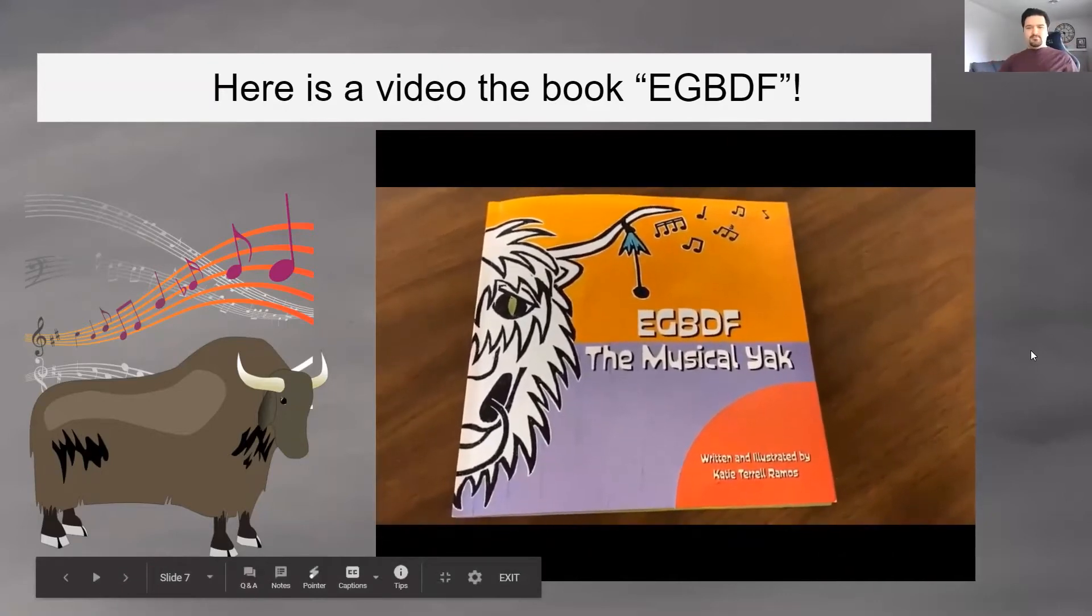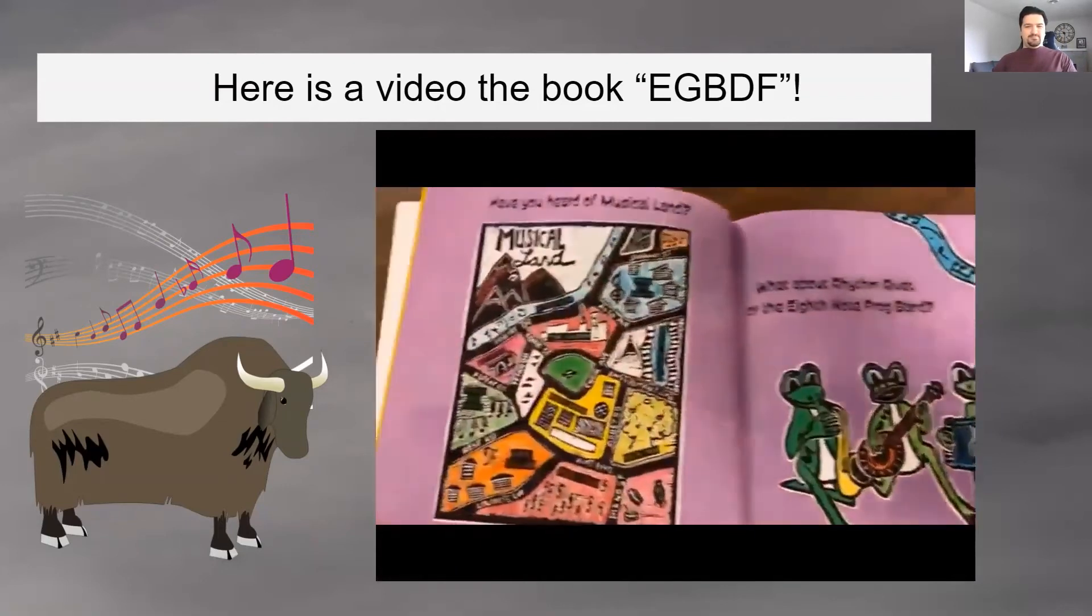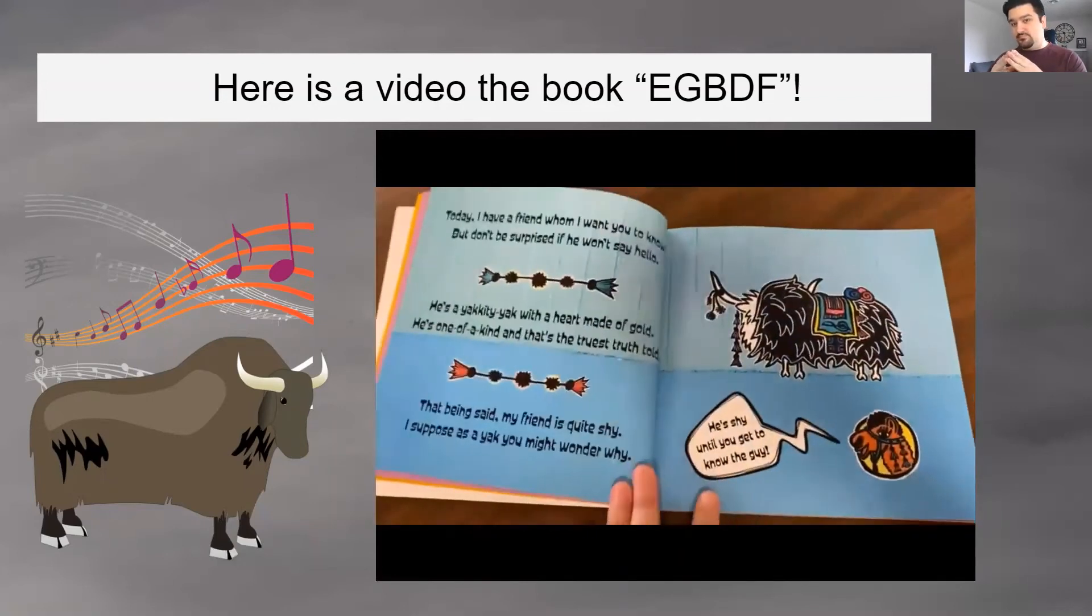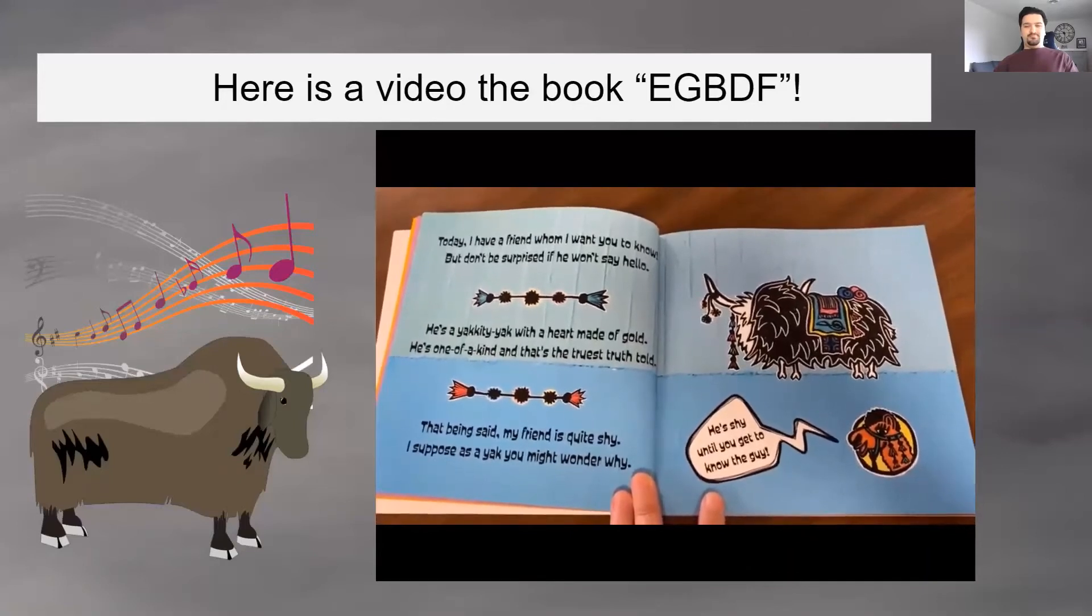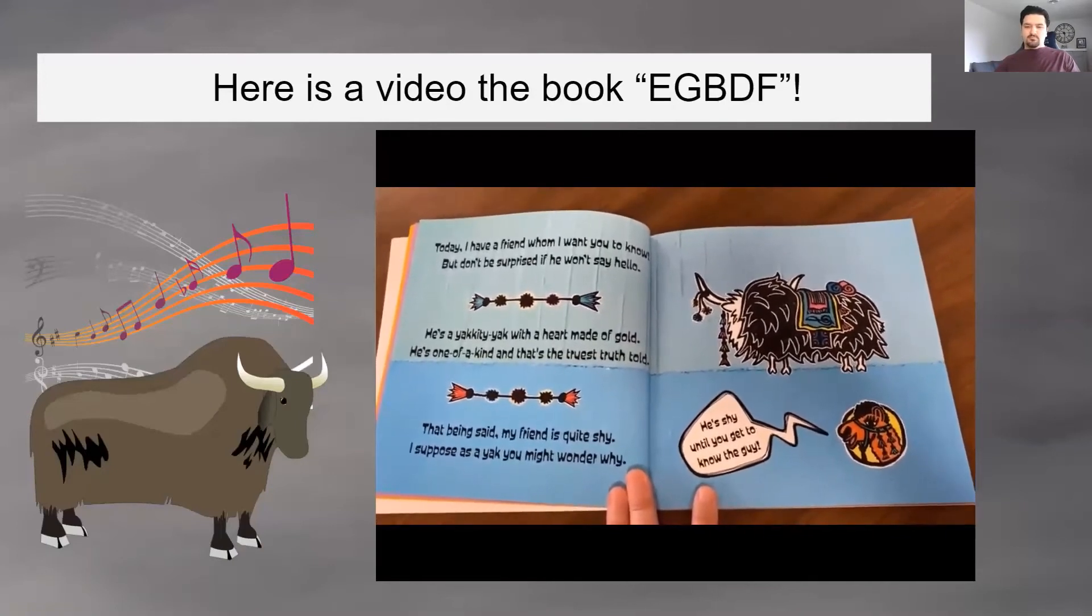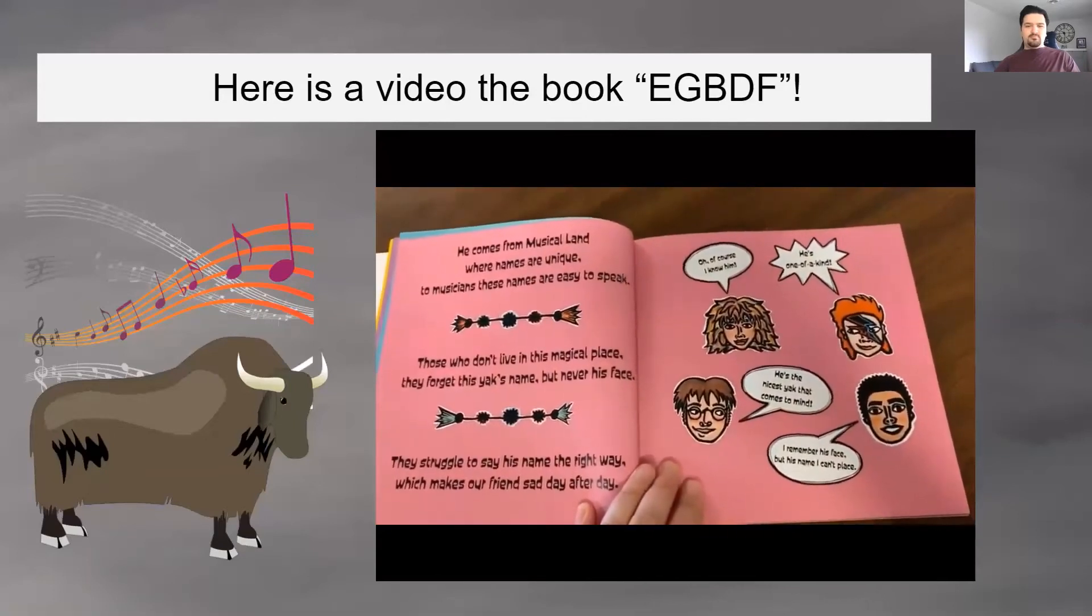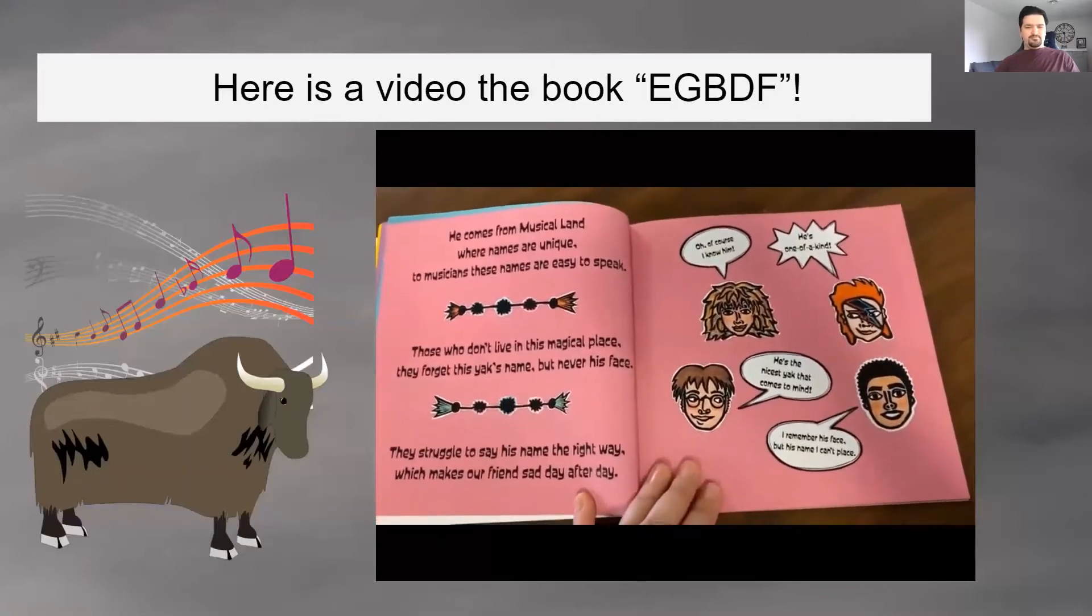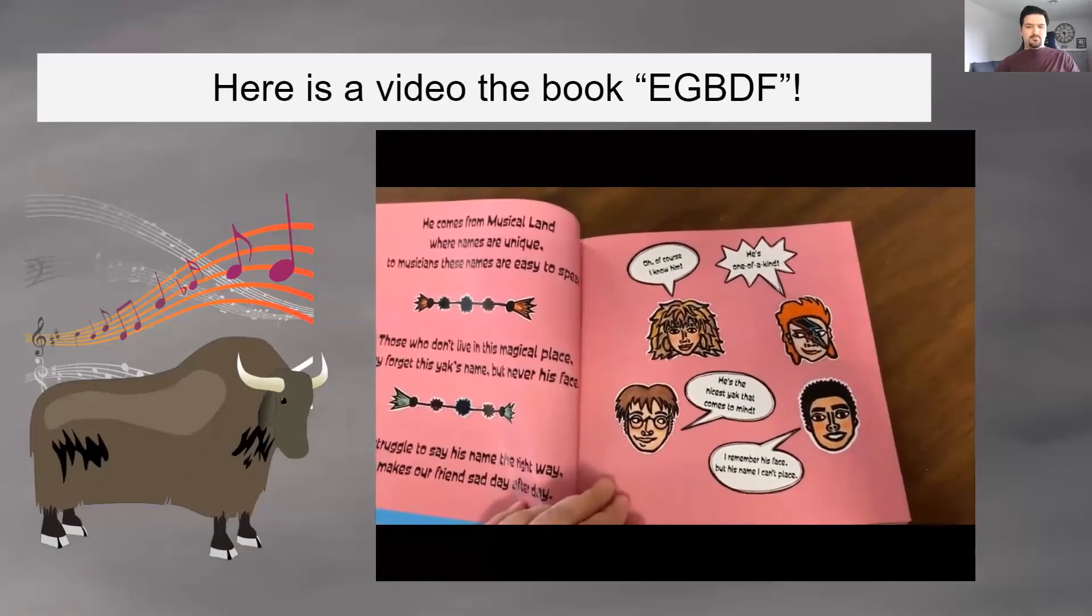And this is me reading EGBDF, the Musical Yak. EGBDF. That's his name. EGBDF. Have you heard of Musical Land? What about Rhythm River or the Eighth Note Frog Band? Today, I have a friend whom I want you to know, but don't be surprised if he won't say hello. He's a yakety yak with a heart made of gold. He's one of a kind, and that's the truest truth told. That being said, my friend is quite shy. I suppose as a yak, you might wonder why. He's shy until you get to know the guy.